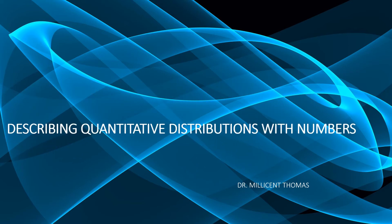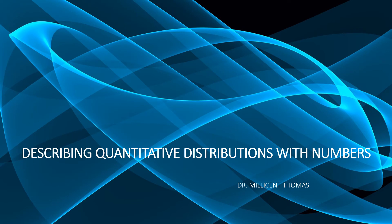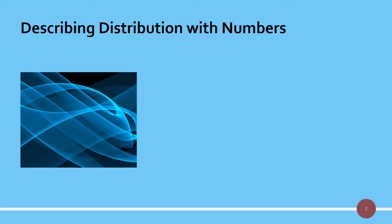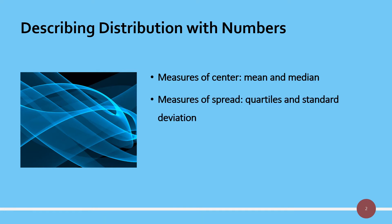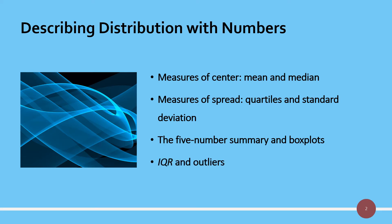This video explains how to describe quantitative distributions with numbers. We need measures of centers, and we are going to see two different types: mean and median. Measures of spread will have quartiles and standard deviation. We need the five number summary to construct a box plot, and we will be learning about IQR and how to find and deal with outliers.